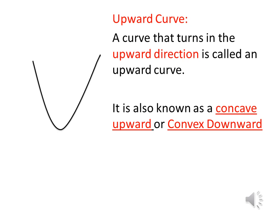We have different types of curves. Depending upon direction, we have two types: an upward curve and a downward curve. An upward curve is simply a curve that turns in the upward direction. It is also called concave upwards or convex downwards.